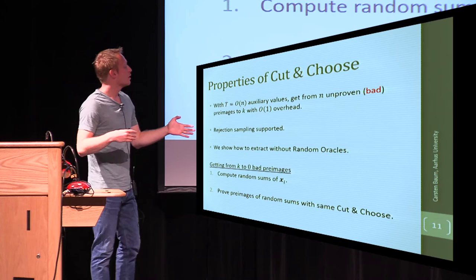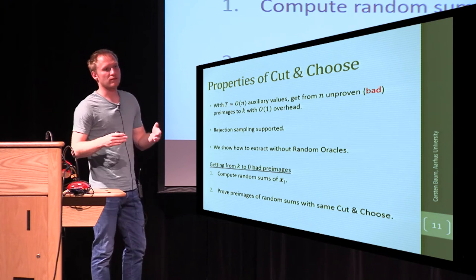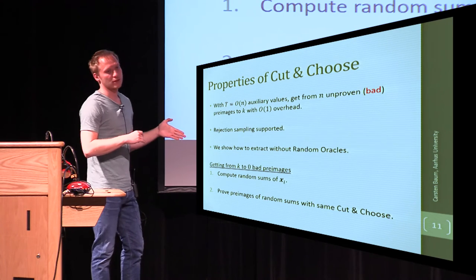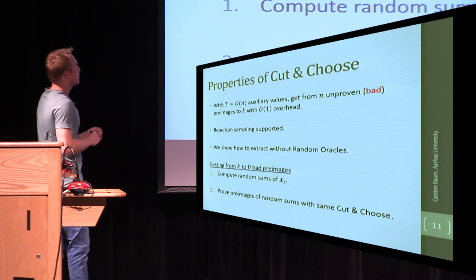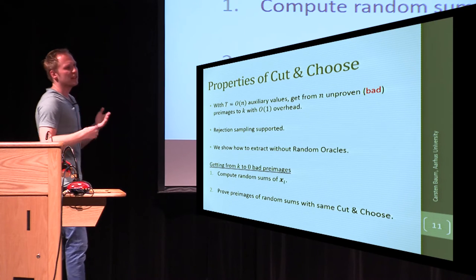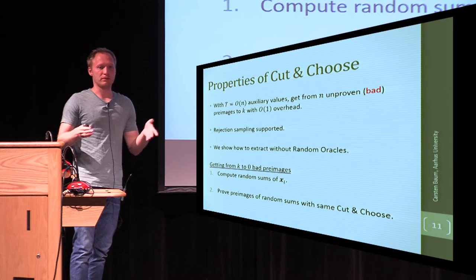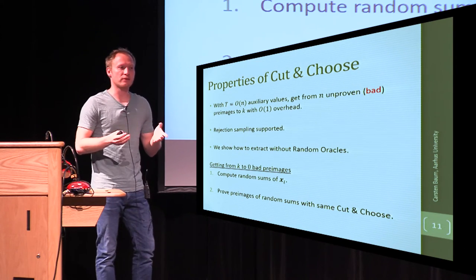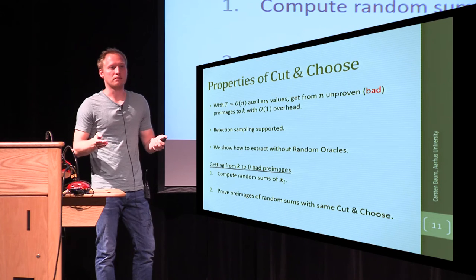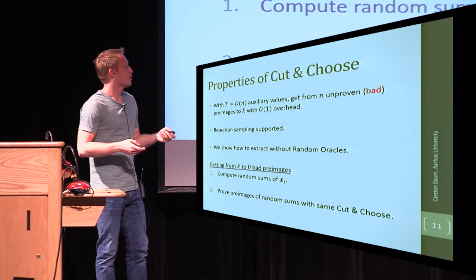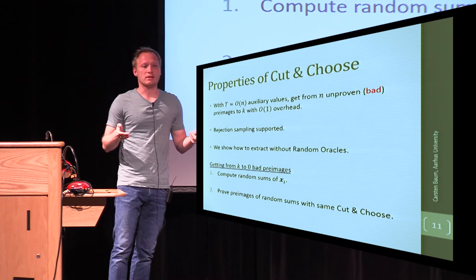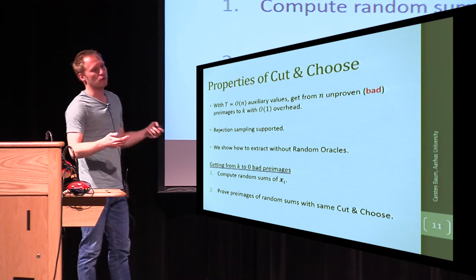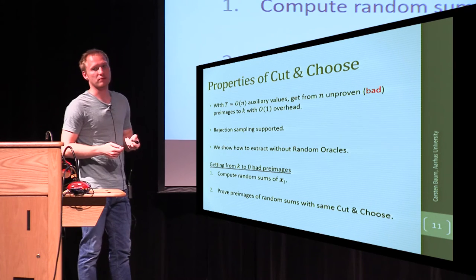So now that we're done from n to k unproven pre-images, let's get from k to 0. So how do we do that? The idea is to basically do the same as we did before, with the cut-and-choose, but instead of going for each value individually, we let the verifier sample random sums of these pre-images, and let the prover prove knowledge of these. And for this proof, we then use the same cut-and-choose as before again.